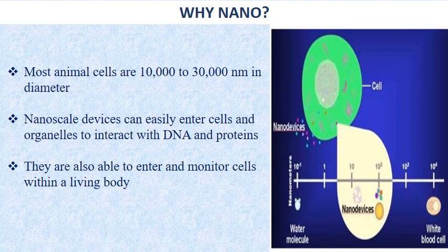Why nano? Most animal cells are 10,000 to 30,000 nanometers in diameter, while nanoscale means anything from 1 to 100 nanometers. These nanoscale devices can easily enter cells and organelles to interact with DNA and proteins. We can enter and monitor cells within a living organism, studying everything happening at a cellular or even subcellular level. That is what makes nanobiotechnology so important.